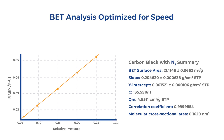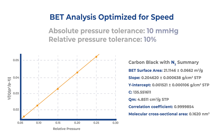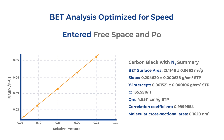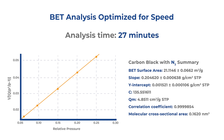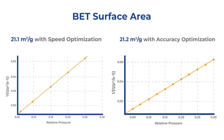Here is an example run optimized for speed with the same sample. Five points were collected and the pressure tolerances were increased. The free space was entered from the previous run since they were the same sample, and the saturation pressure was entered. The equilibration interval was shortened to five seconds. Under these conditions, the analysis time was shortened to 27 minutes. The BET surface area was 21.1 with speed optimization and 21.2 with a normal run, so there wasn't much compromise on the quality of the data on this particular carbon black sample.